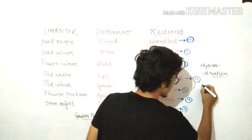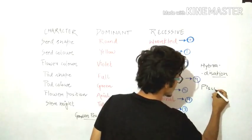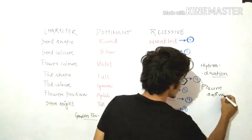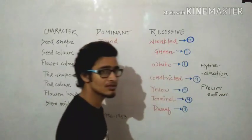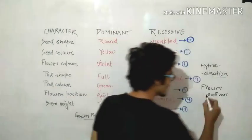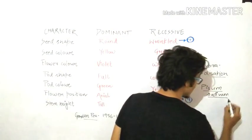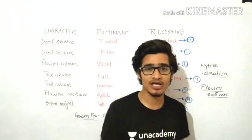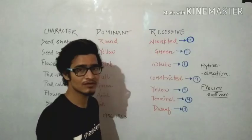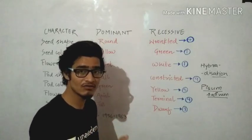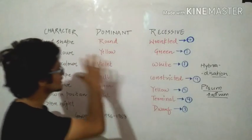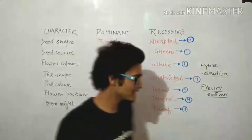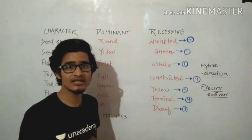How can you write it? Pisum with P capital because it is the generic name, and sativum with s small because it is the specific epithet. Since both of these words are handwritten, they must be separately underlined. This type of nomenclature is known as binomial nomenclature given by Carolus Linnaeus. We have understood it in the chapter Biological Classification and in Living World also, right?